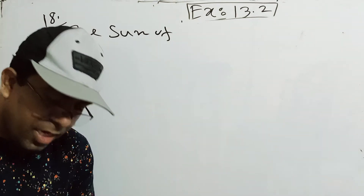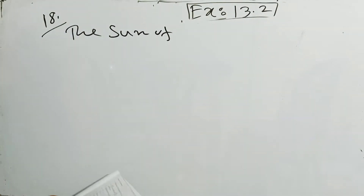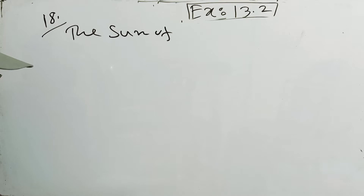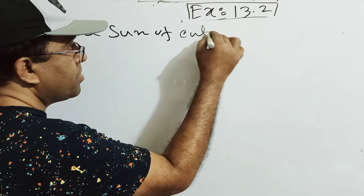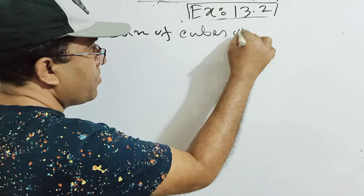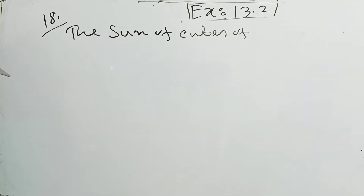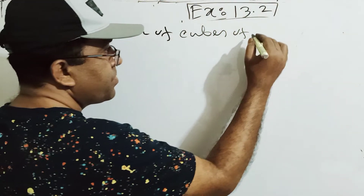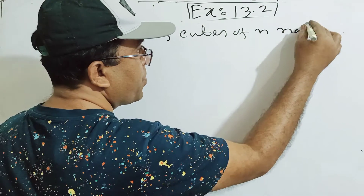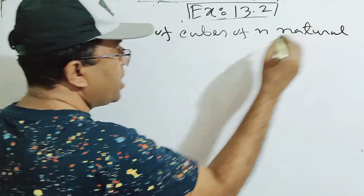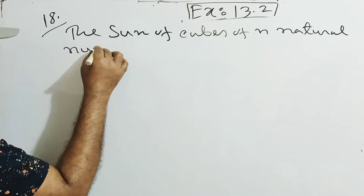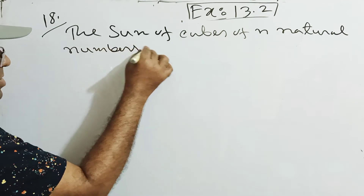N natural numbers. Sum of cube of first N natural numbers. The sum of cube of first N natural numbers.